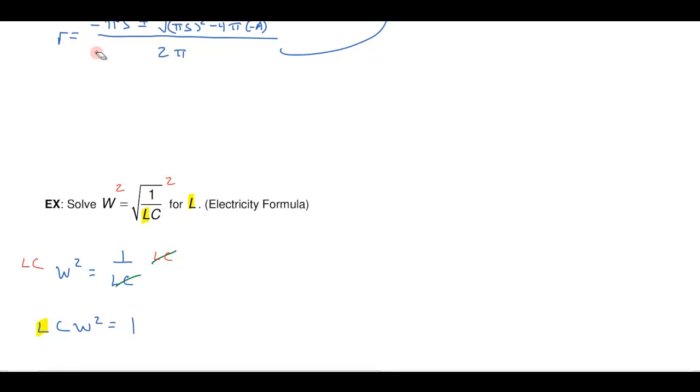I wanted that to be a different color. There we go. So if I divide both sides by CW squared then I'll get my answer that my L, it'll be all left by himself on this side because these will cancel. That's going to be 1 over CW squared.